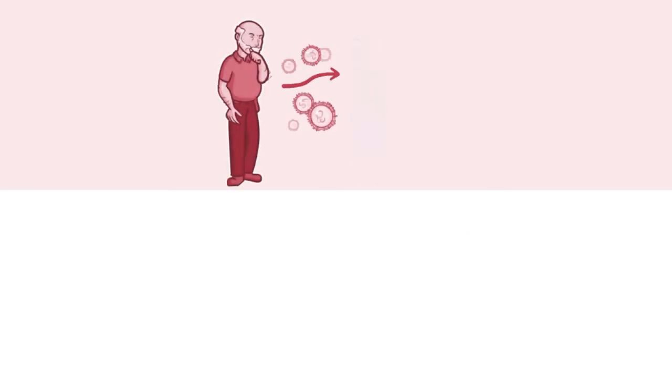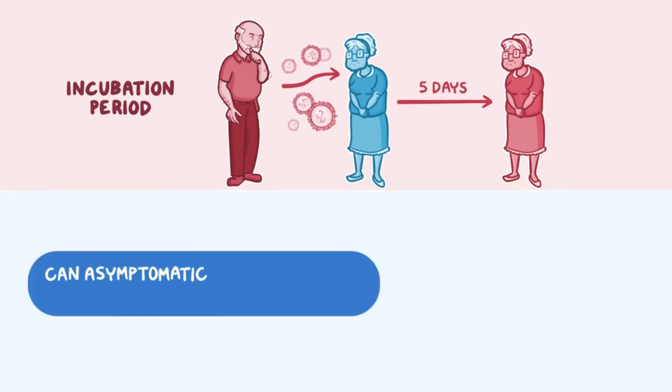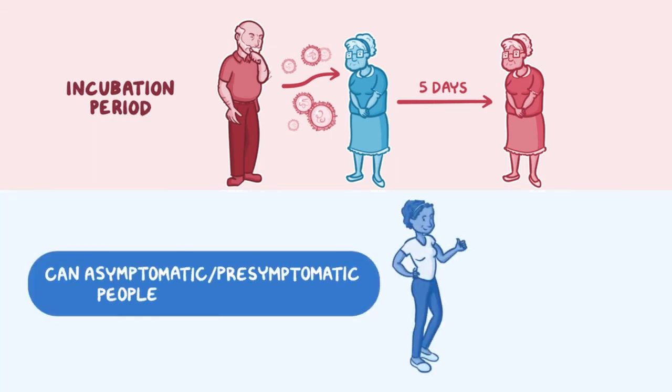Once a person is infected, symptoms develop about 5 days later. This is called the incubation period. Now there's a debate about how much asymptomatic people or pre-symptomatic folks that are in the incubation period are spreading the disease, and it may be much more than what was originally thought.